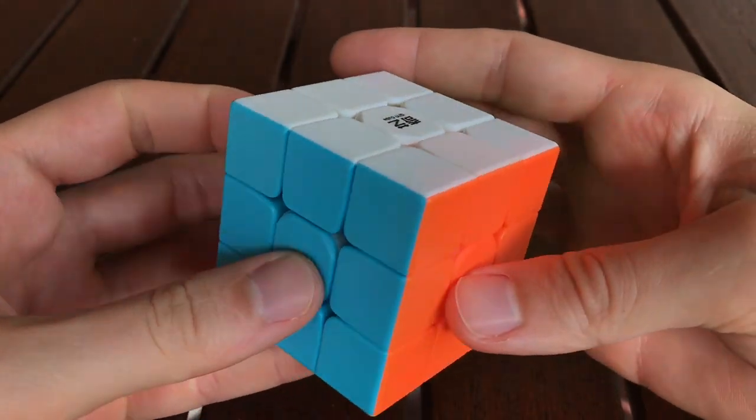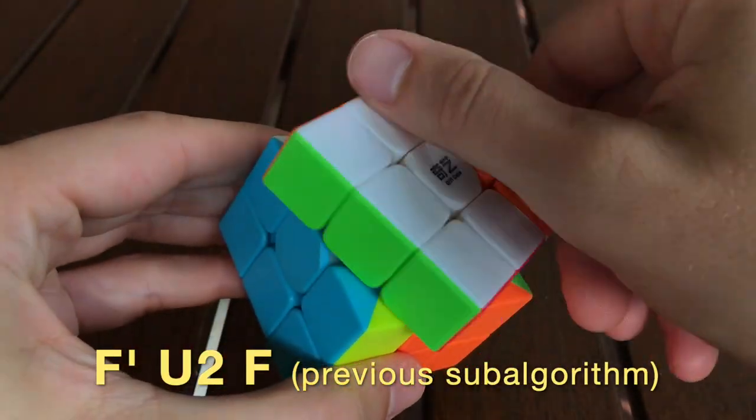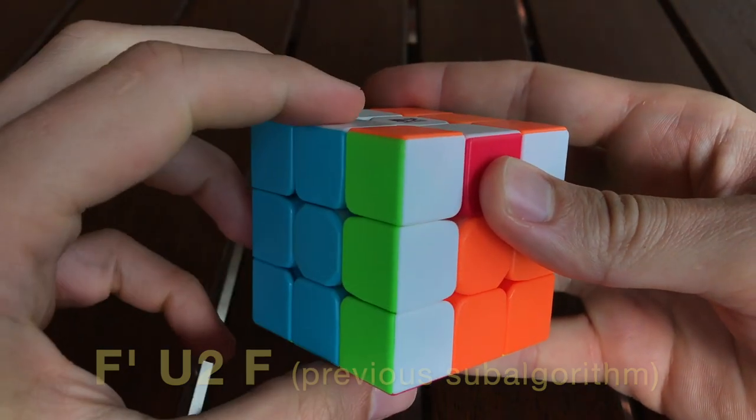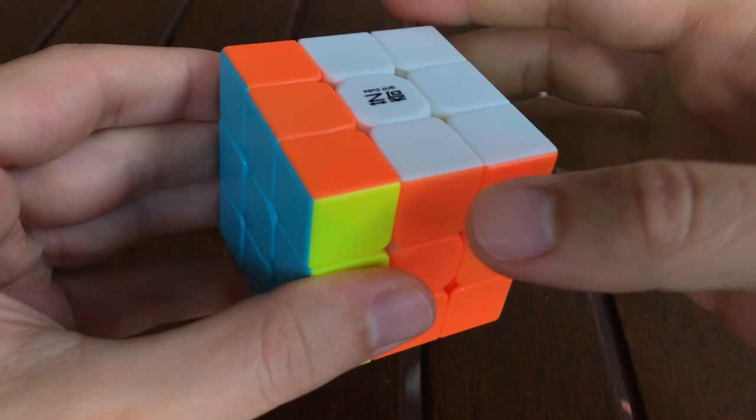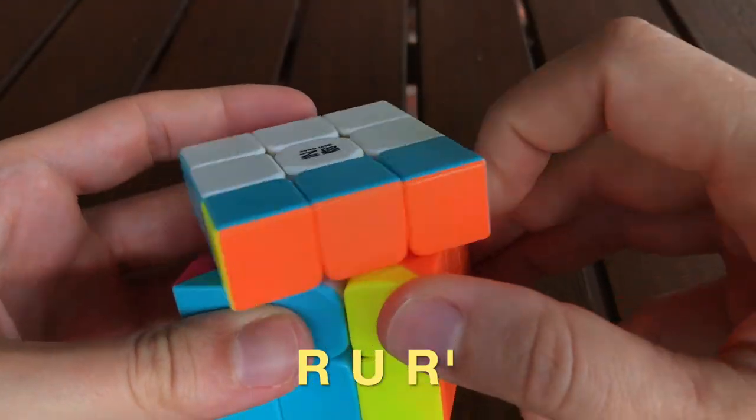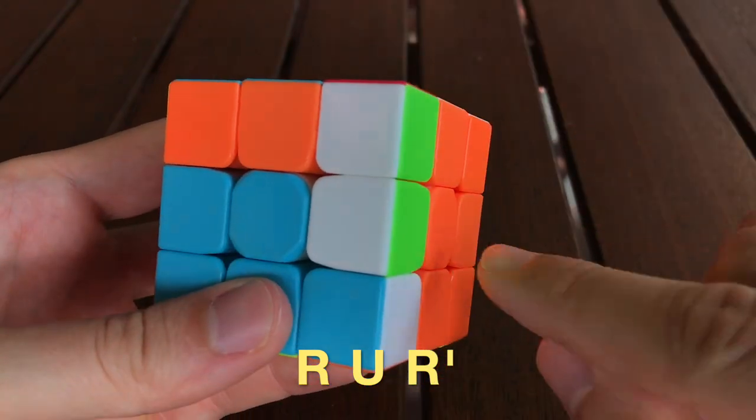Now let's compare this to the previous sub-algorithm, which put the green and white edge piece in the front right position, with green on front and white on the right. This new sub-algorithm puts the same piece in the same position, except the green sticker is on the right side now and white is on the front.